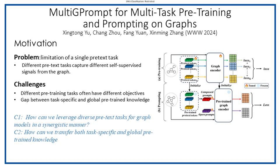Recently, GNNs have emerged as a mainstream technique for graph representation learning. However, their efficacy within an end-to-end supervised framework is significantly tied to the availability of task-specific labels. To mitigate labeling costs and enhance robustness in few-shot settings, pre-training on self-supervised tasks has emerged as a promising method, while prompting has been proposed to further narrow the objective gap between pretext and downstream tasks.